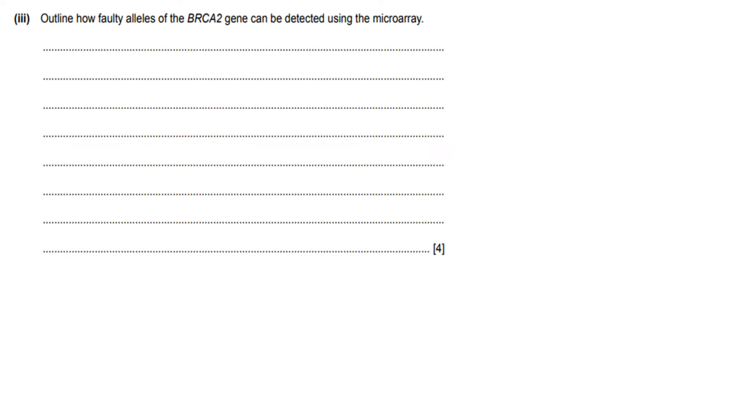It says outline how faulty alleles of the BRCA2 gene can be detected using the microarray. I know microarrays are very frustrating for a lot of students, and I have a video on microarrays. But I'll try to explain as much as possible here. So a microarray is like a tiny tray. And on this tray, there are many wells. So these are wells. They are not holes that you can pour things through and they come out at the other end. They're like wells that are very tiny.